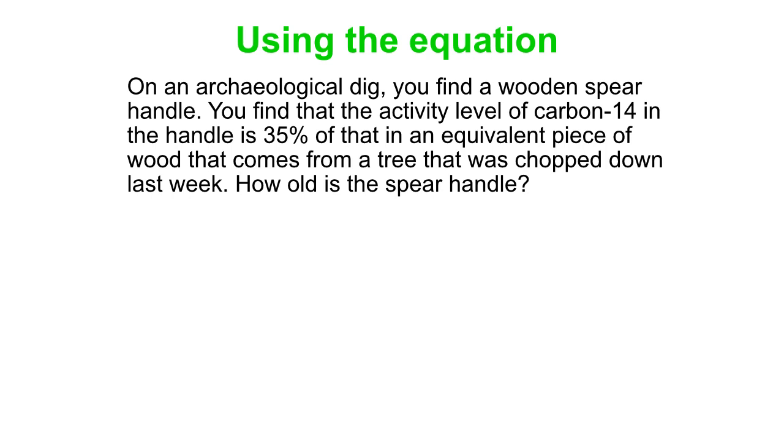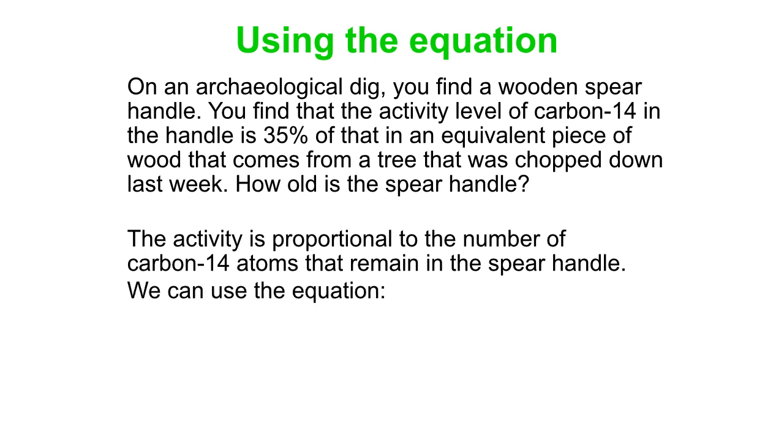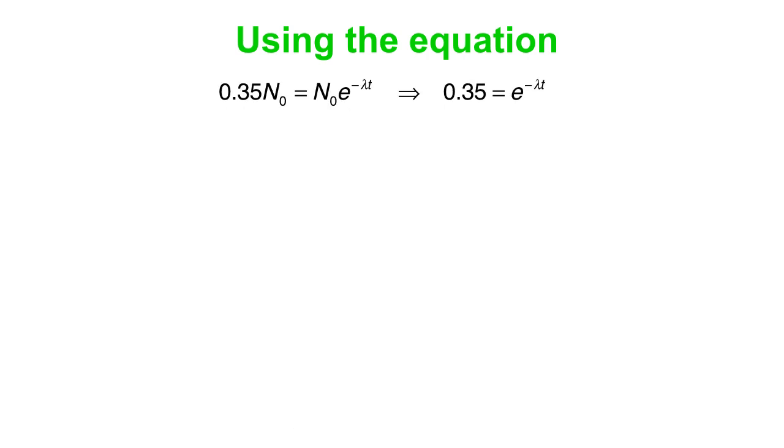So let's do an example. So you find a wooden spear, and you find the activity level is 35% of what you would expect from an equivalent piece of wood if you just chopped it down today. How old is the spear handle? So what we can do here is say n is n-naught e to the minus lambda t. But in this case, n is now decayed from n-naught to just 35% of n-naught, 0.35 n-naught. So then we get the n-naughts to cancel out. We get 0.35 is e to the minus lambda t. Take the natural log of both sides.